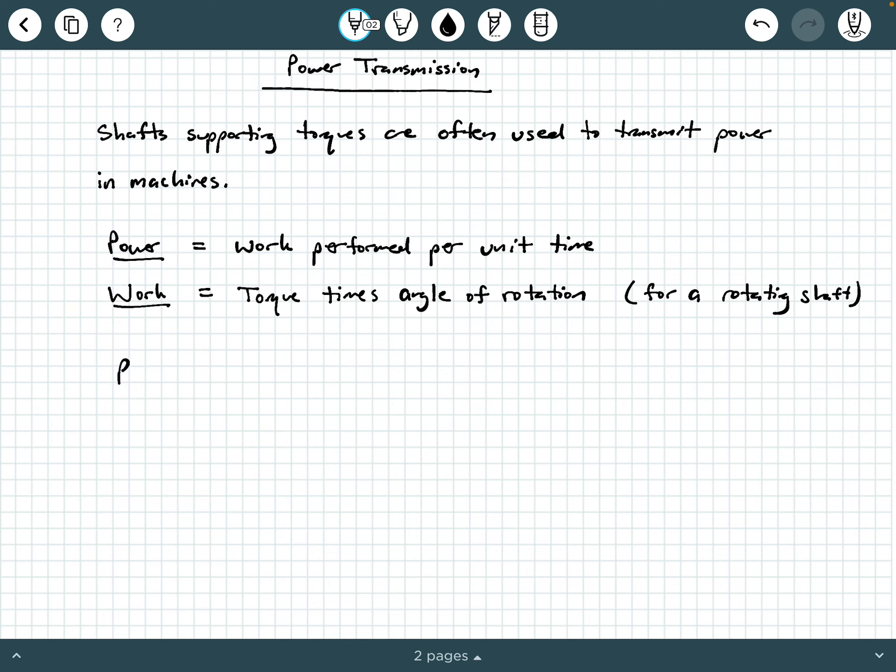P is going to be power, and that's going to be equal to work performed per unit time. So we can write this as T dθ/dt. Now, how does this translate to work performed per unit time? Well, the T dθ is work. Notice that's torque times a differential angle of rotation, and then the dt in this denominator is the per unit time.